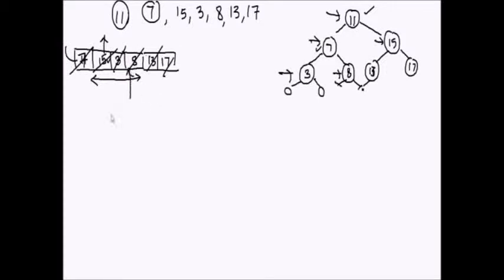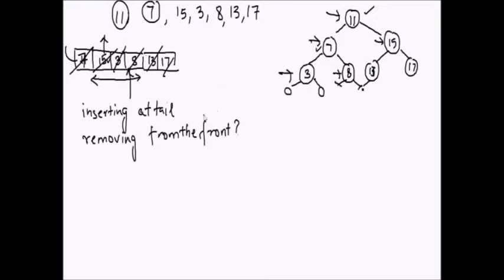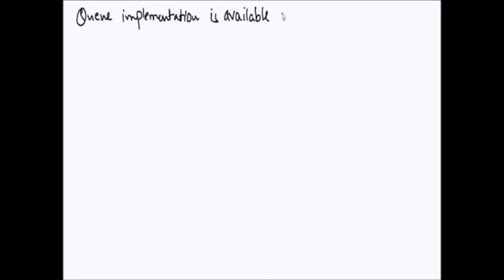Now what kind of data structure is this? We are inserting at the tail and removing from the front. That is a queue — first in, first out. I will be assuming while writing the code that the queue implementation is already available. For details on queue implementation you can visit my blog AlgorithmsAndMe.com. These are the three queue API functions available: enqueue, dequeue, and isEmpty.